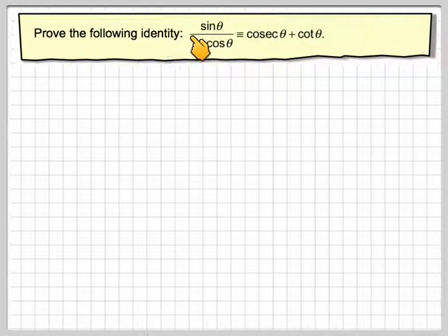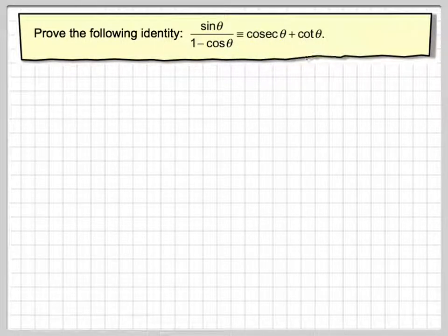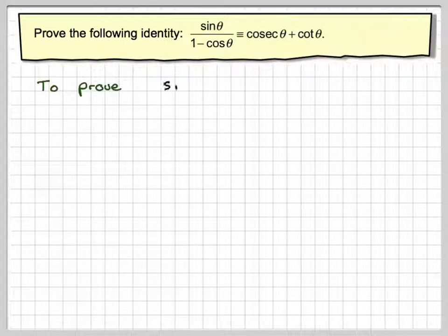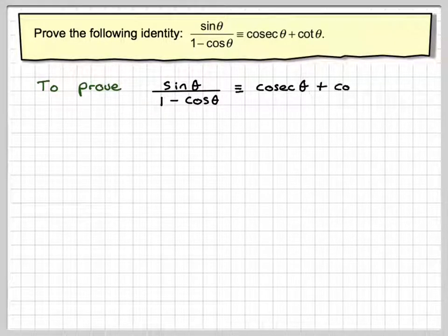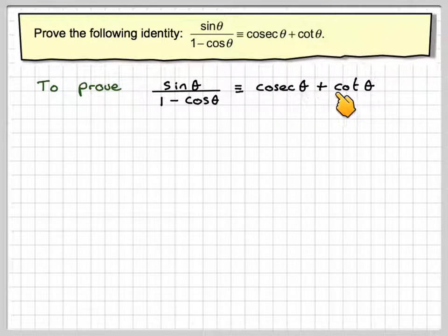Prove the following identity: sine theta over 1 minus cos theta is equivalent to cosec theta plus cot theta. This is going to require a special technique — unless you've actually seen it before, you probably wouldn't realise how to do this. We've got to prove that sine theta over 1 minus cos theta is equivalent to cosec theta plus cot theta.